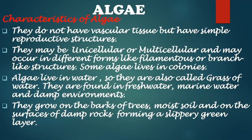Algae do not have vascular tissue but have simple reproductive structures. They may be unicellular or multicellular and may occur in different forms like filamentous or branch-like structures. Even some algae live in colonies. Algae live in water so they are also called grass of water. They are found in freshwater, marine water, also called sea weeds, and can be found in damp environments. They may grow on the barks of trees, moist soil and on the surfaces of damp rocks forming a slippery green layer.